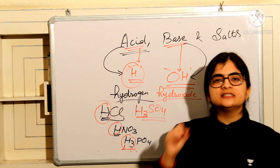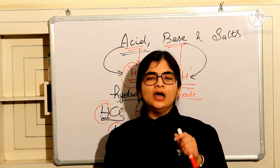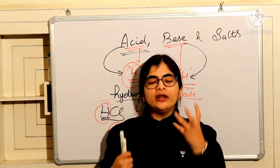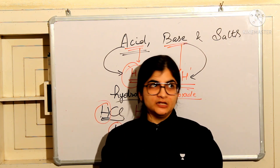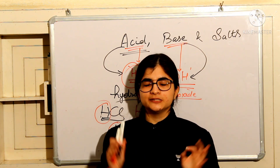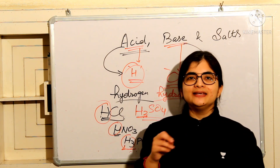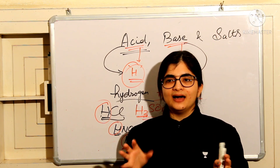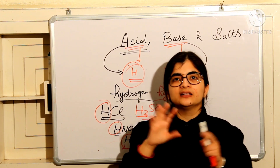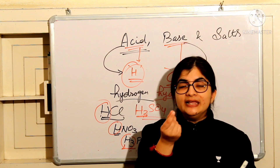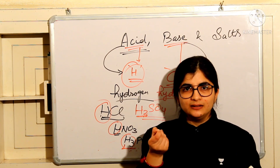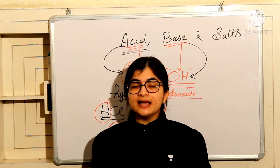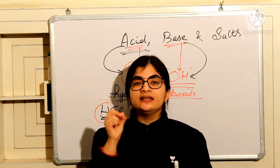Vitamin C is also present in sour things like amla and many other items. My favourite sour thing — I love khatta saman. Imli, that is tamarind. Which acid is present in tamarind? Tartaric acid.